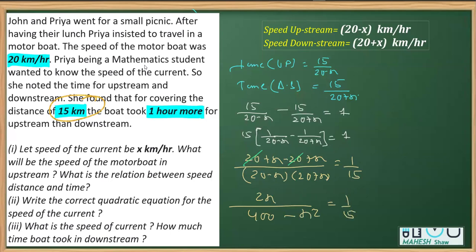Now I'll do cross multiplications, which comes out to be 15 into 2 is 30x and 1 multiplied by this is 400 minus x square. Now what next I'm going to do is to frame the quadratic equation in the standard form. I'm transposing x square to the left. There is positive x square, 30x, and transposing 400 to the left is minus 400 equal to 0.